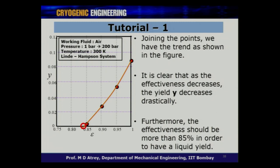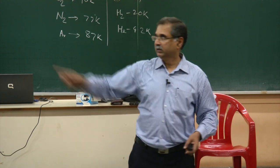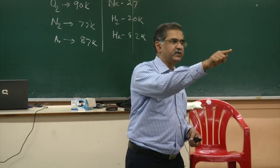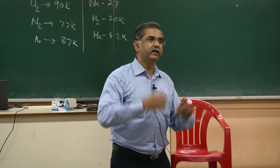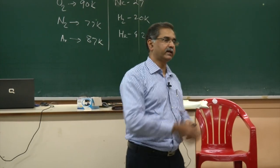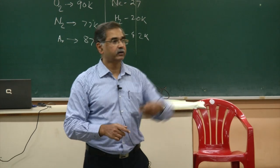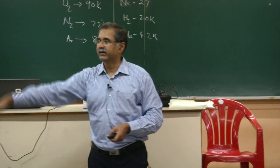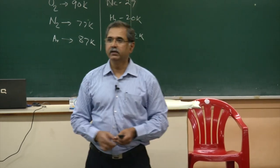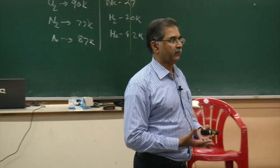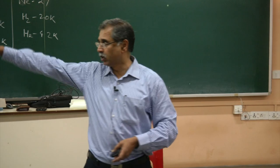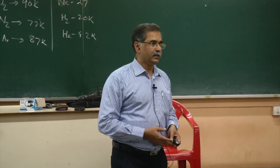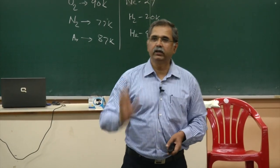As effectiveness decreases, Y decreases drastically; effectiveness must be above 85% to have any liquid yield at all. A simple shell-and-tube heat exchanger, which typically achieves only 75–85% effectiveness, is never used in cryogenics. Instead, very special high-effectiveness heat exchangers are required. This also means optimizing operating pressure — whether 150 bar, 200 bar, or 300 bar — to maximize yield, followed by designing heat exchangers to achieve 95%+ effectiveness.